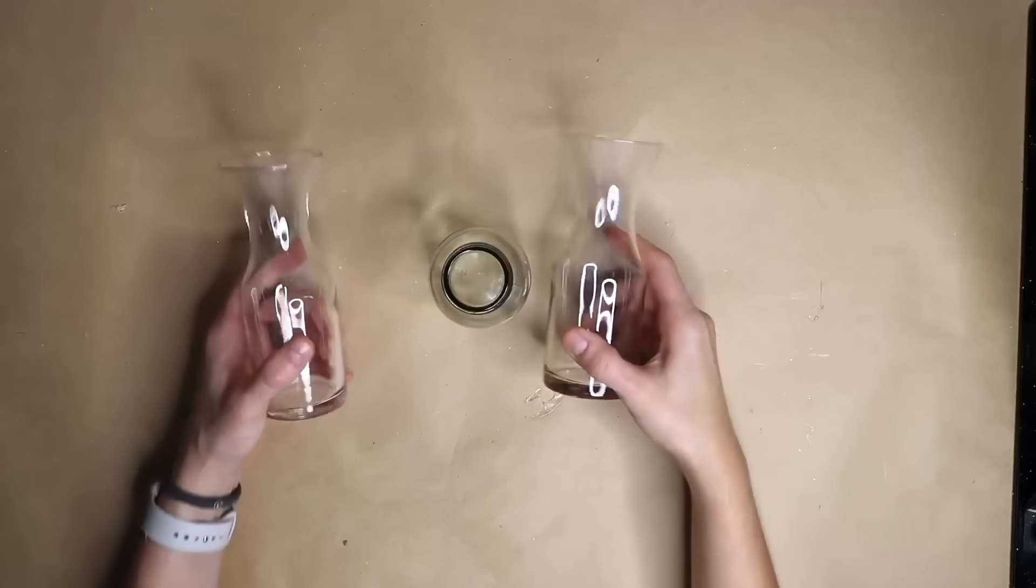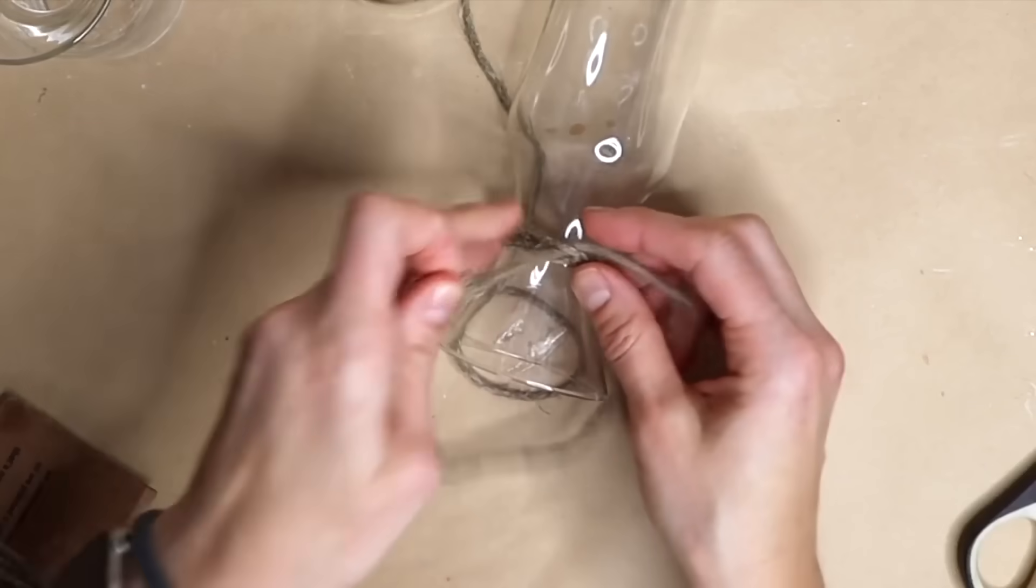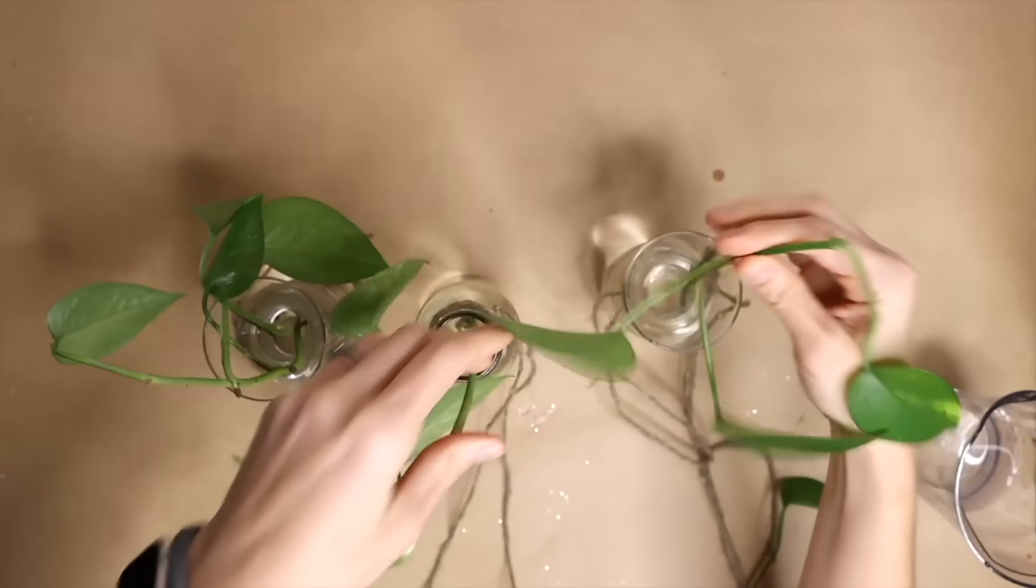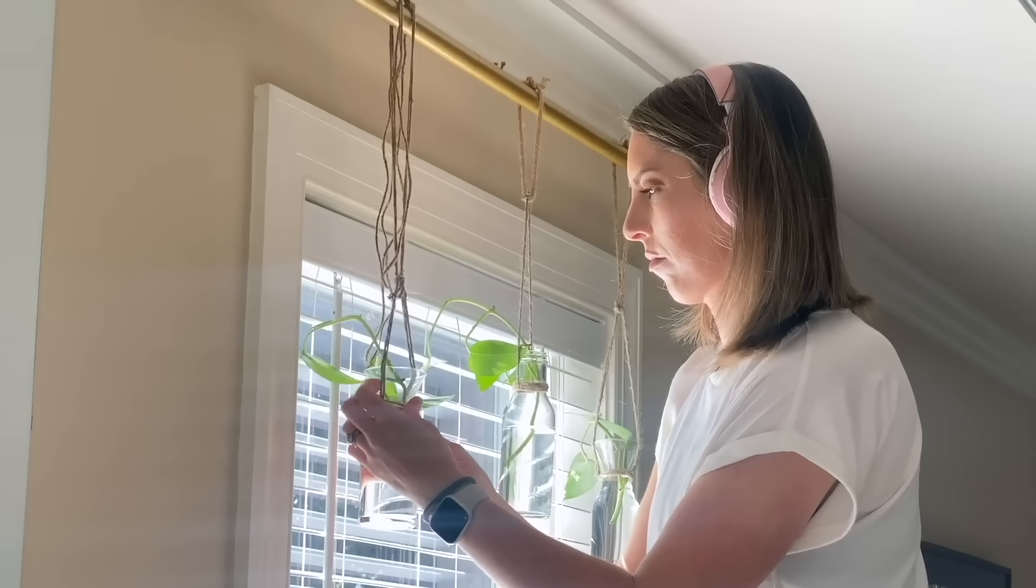Head to Dollar Tree and pick up three glass carafes. Take twine and wrap, tie, and secure around the glass and clip parts of the plant off. Add water to the glass bottles and then add clippings to the water. Hang a curtain rod and add more twine or rope from the rod.